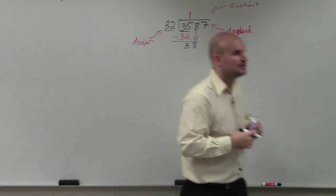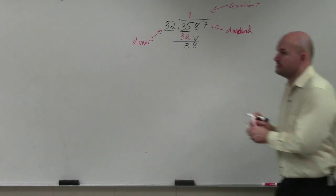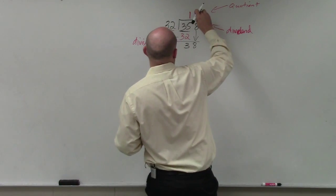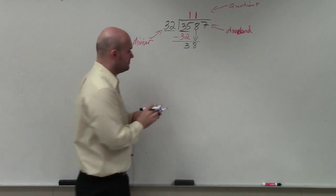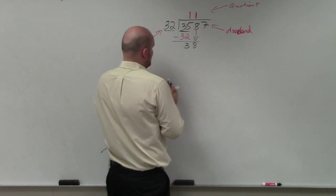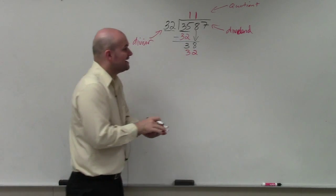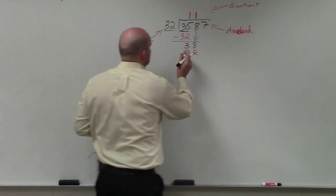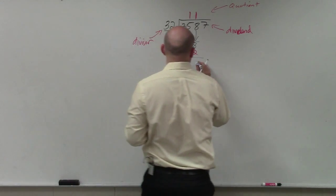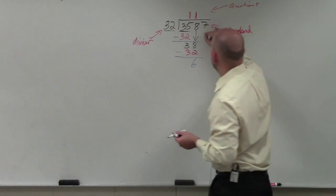Does 32 divide into 38? Yeah, it goes in there again one time. Then again I take 1 times 32, that gives me 32. And then again I subtract the two rows, and now this time I get 6. 32 does not divide into 6, so now I bring down the 7.